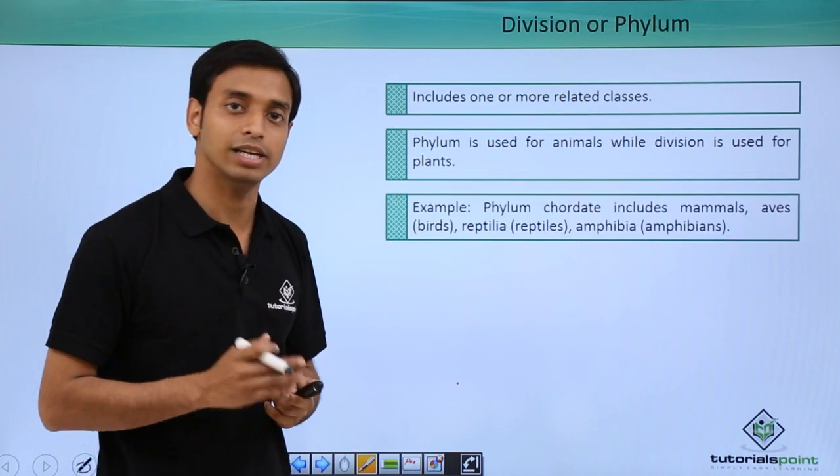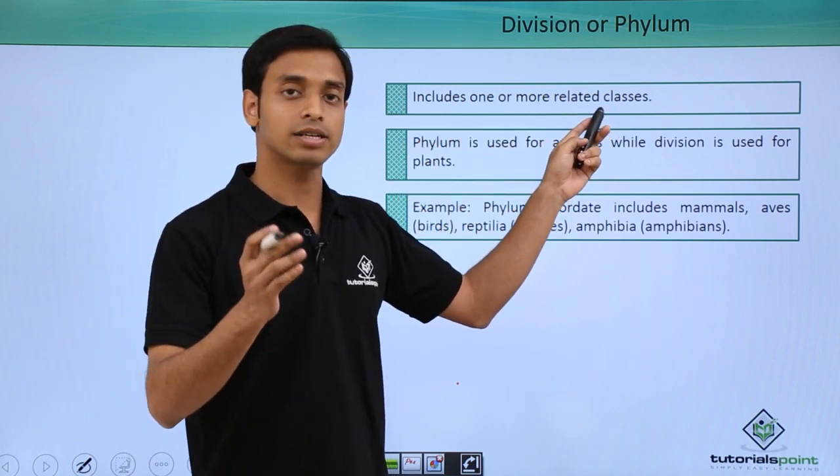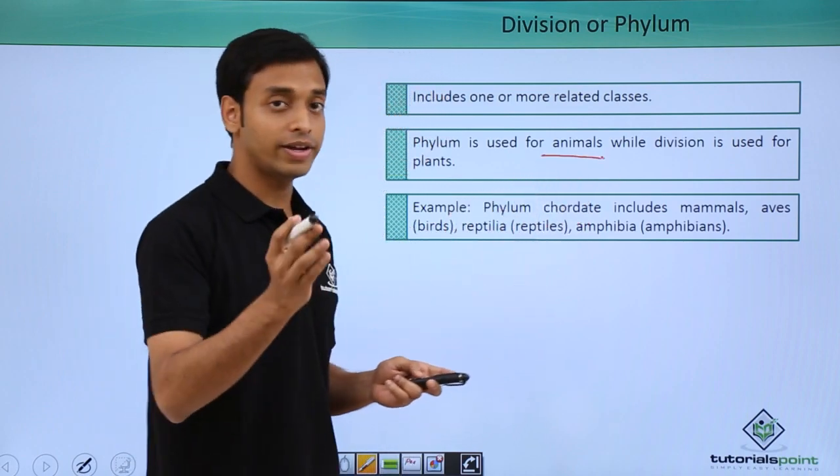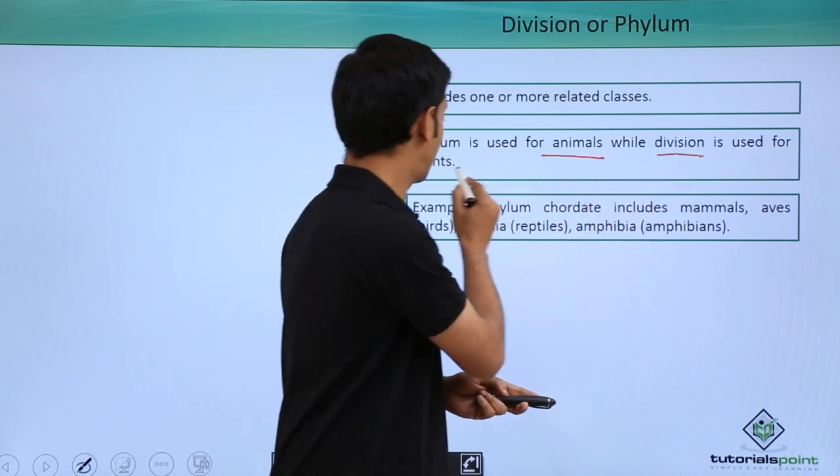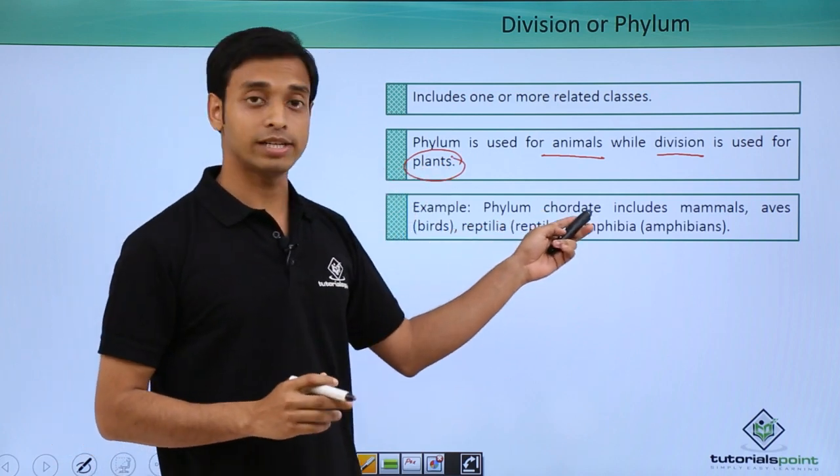The next one is division or phylum. It includes one or more related classes. The word phylum is used specifically for animals, whereas the word division is used for plants.